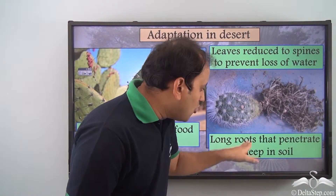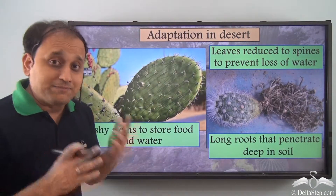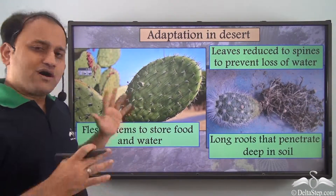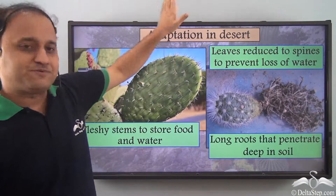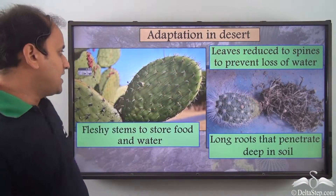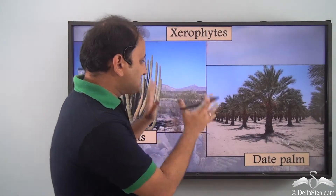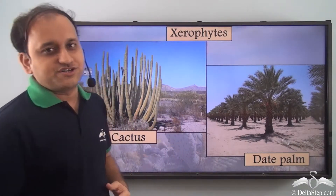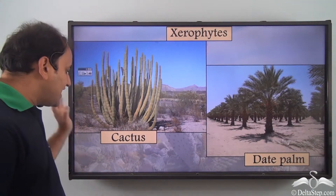Desert plants also have long roots that penetrate deep into the soil to look for water or moisture, because the desert is very hot and very dry, so plants have adapted accordingly. Such plants which can survive in a very dry, hot region are called xerophytes. Some examples of xerophytes are cactus and date palm.